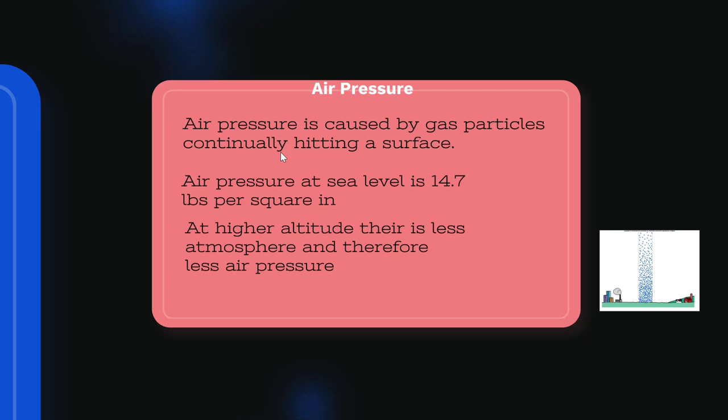Right now we have an air pressure at sea level of about 14.7 pounds per square inch. That means for every square inch on your body, you are having 14.7 pounds of air pressure on it — you are lifting a lot of air off of you. You might not feel it because your daily life is always at 14.7 pounds per square inch, so you're used to having that much on you.